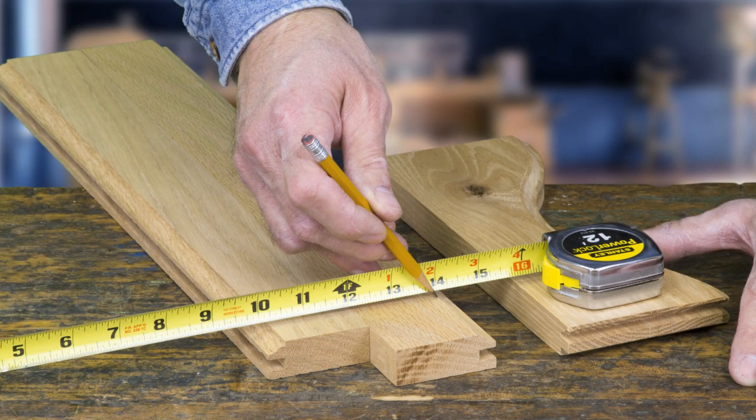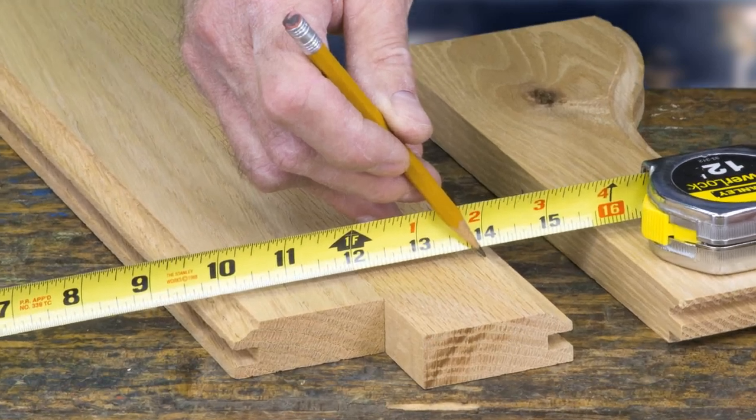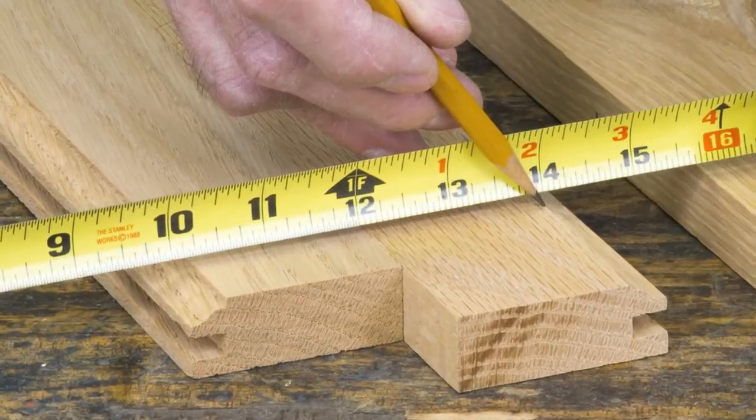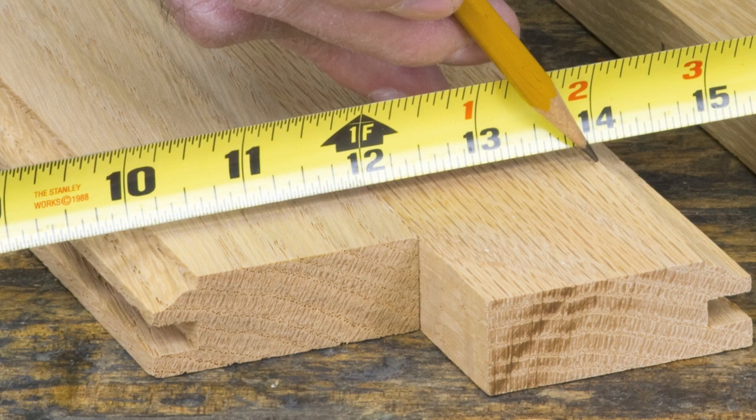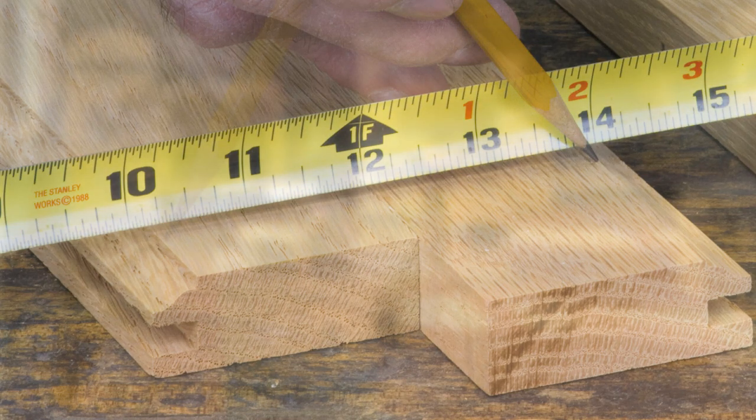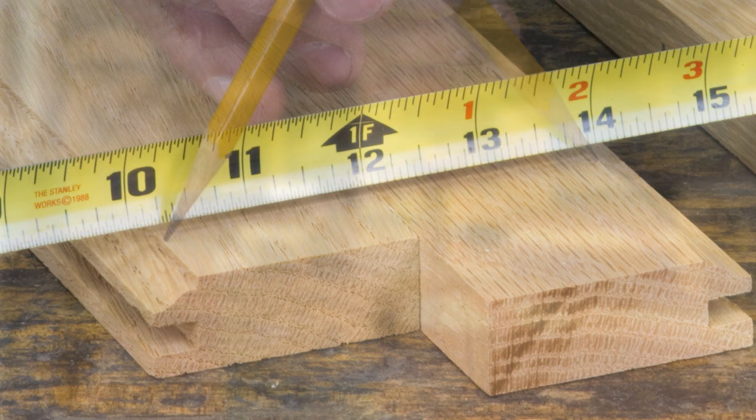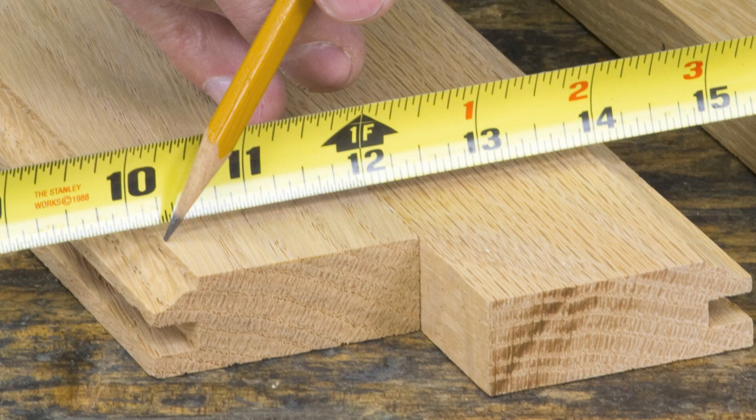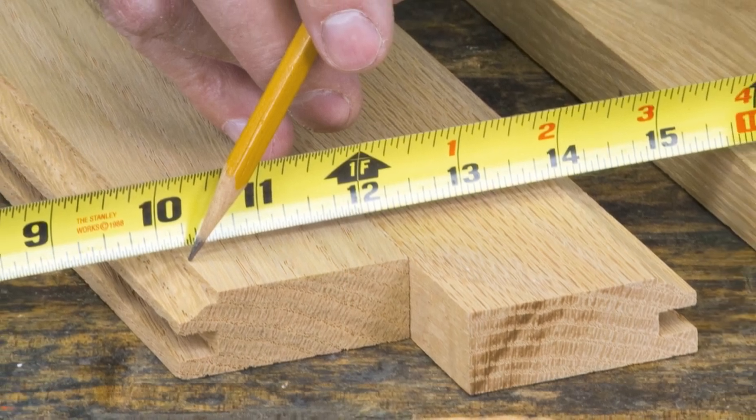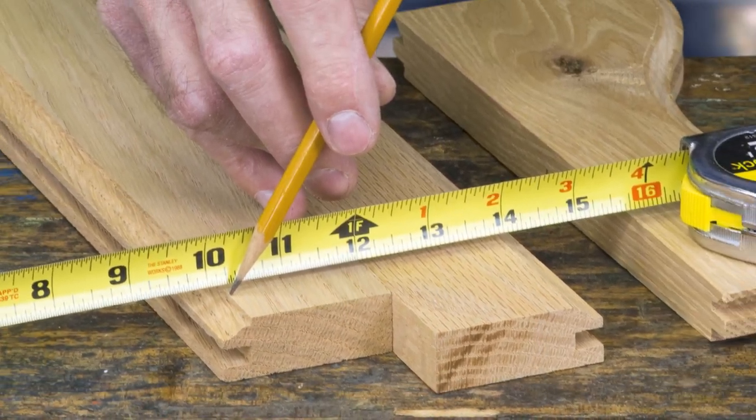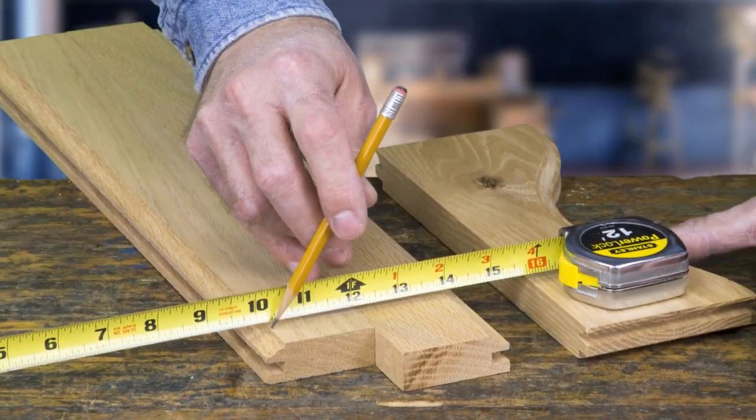The second method requires two sample stiles with the pattern cut in them and a tape measure. Place the stiles with their smooth edges back to back. Lay the tape across the stiles with the 14 inch tape mark, your door width, lined up with the edge of the unmachined face of the stile, opposite the end of the tape. Read the tape measurement at the same place on the opposite stile, nearest the end of the tape. That tape reading at that point, 10 1/4 inches, is the rail length needed.